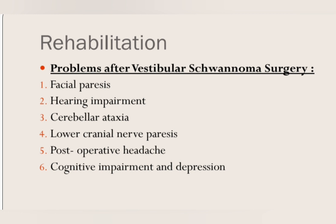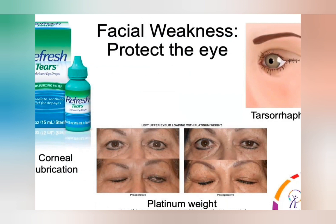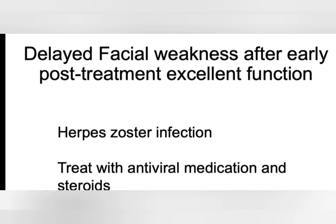If there is facial paralysis, it can be graded by the House-Brackmann scoring system. If it is just grade 1 or grade 2, we can do eye care: use artificial tears, lubricants, eye shielding, or sometimes tarsorrhaphy and platinum or gold plates to close the eye. If the facial nerve was intact after surgery but weakness develops after one to two weeks, it can be due to reactivation of herpes zoster — treat with antiviral and steroids, and the outcome is very good.